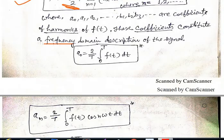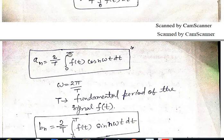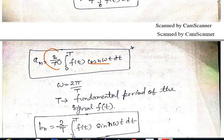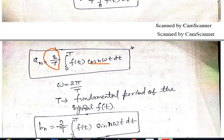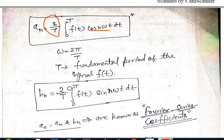Now we proceed towards aₙ. The coefficient aₙ is equal to (2/T) times the integration from 0 to T of f(t)·cos(nω₀t) dt, where ω₀ = 2π/T and T is the fundamental period of the signal f(t). Similarly, bₙ is equal to (2/T) times the integration over one fundamental time period T of f(t)·sin(nω₀t) dt.